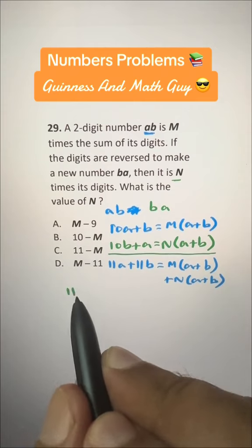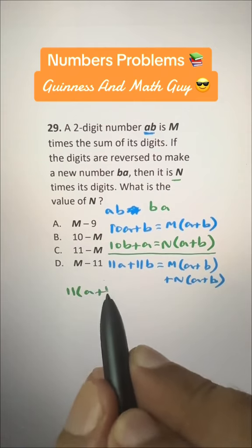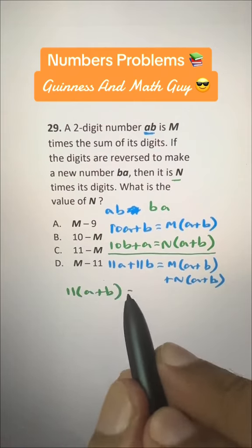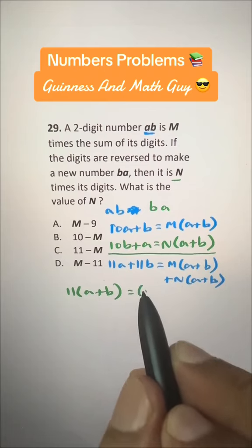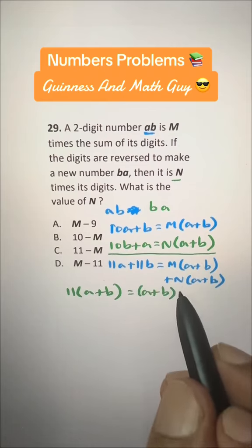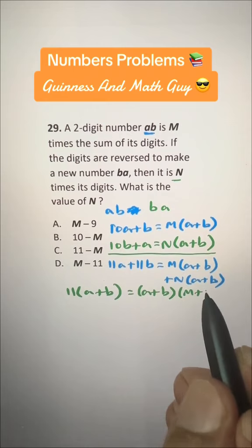Now, here we have 11 common, so A plus B. And then, here let's take A plus B common, A plus B. And we have M plus N.